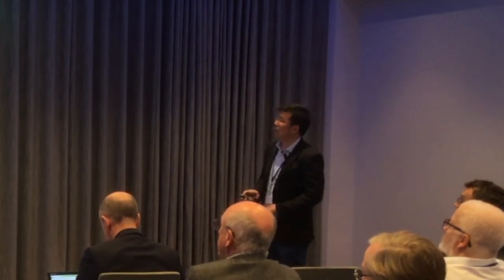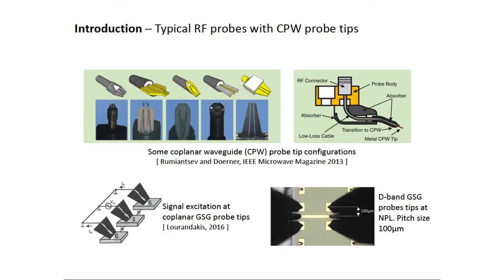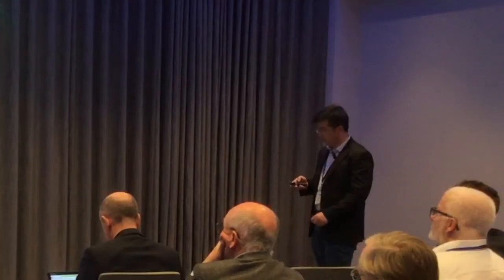This slide shows typical RF probes with CPW probe tip configurations — this is actually from a paper published by a previous speaker. Although they always have the GSG probe tip configuration, they may have different styles from different manufacturers. It shows what's inside these probes: you have a coaxial input and then a CPW output. This photograph shows the D-band (110 to 170 GHz) GSG probe tips at NPL. The pitch size is 100 micron — that's the center-to-center distance between signal and ground.